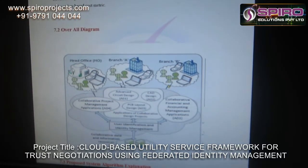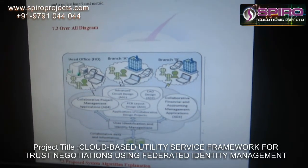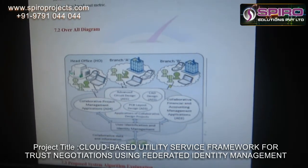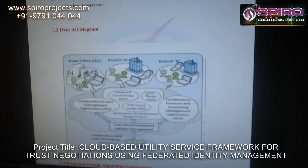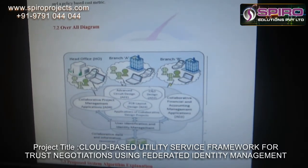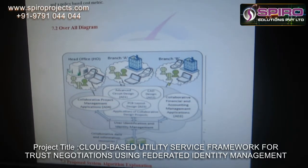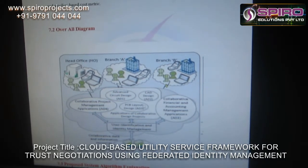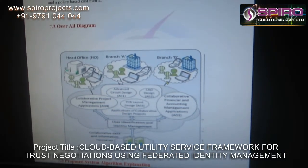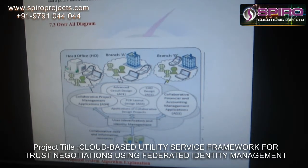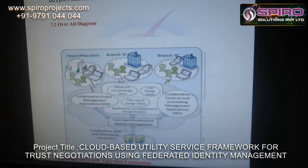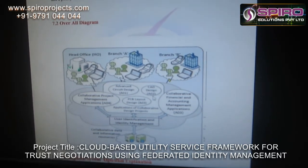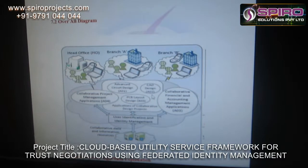All the data can be monitored only by the authorized person in the head office. That person is the only one who can monitor all the data. Branch A can access only Branch A details, and Branch A cannot access Branch B details. Similarly, Branch B can only monitor Branch B details. This is how we secure our data, and the authorized person in the head office can access and monitor everything. This is the proposal concept of our project.